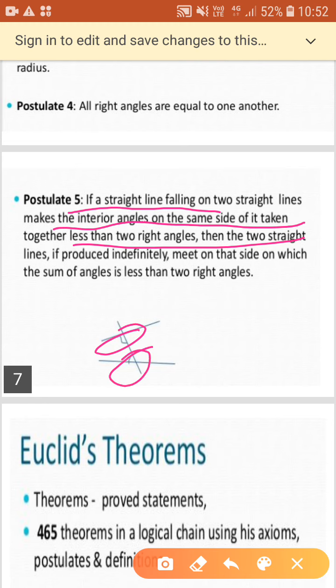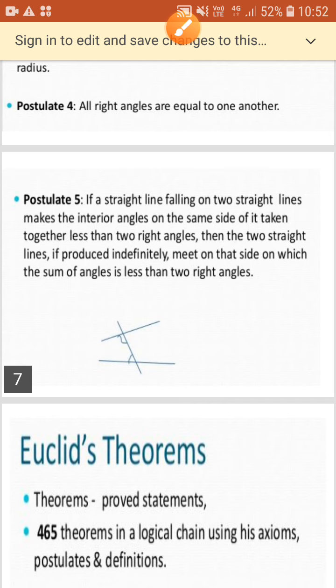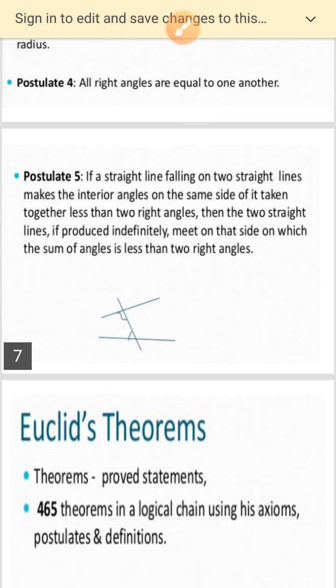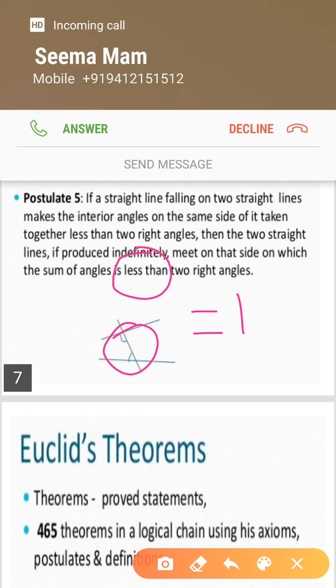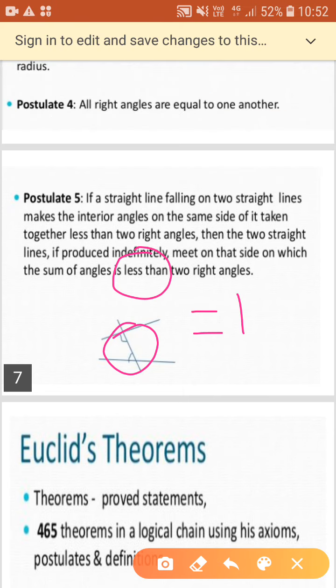That is, here we have the left side and these two angles we are talking about. Then the two straight lines, if they are produced, then they meet on that side on which the sum of angles is less than two right angles. It means that these two lines are going to intersect in this type of direction. So, we have this postulate and it clearly says, if it is less than two right angles. So, what if the sum of these two angles is exactly 180 degree?